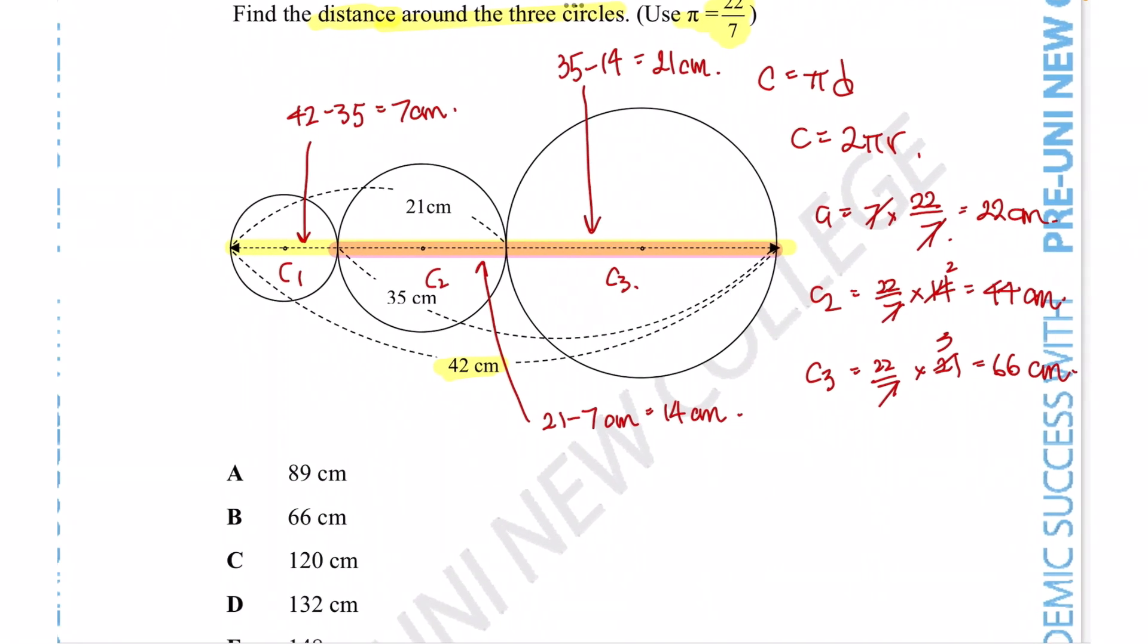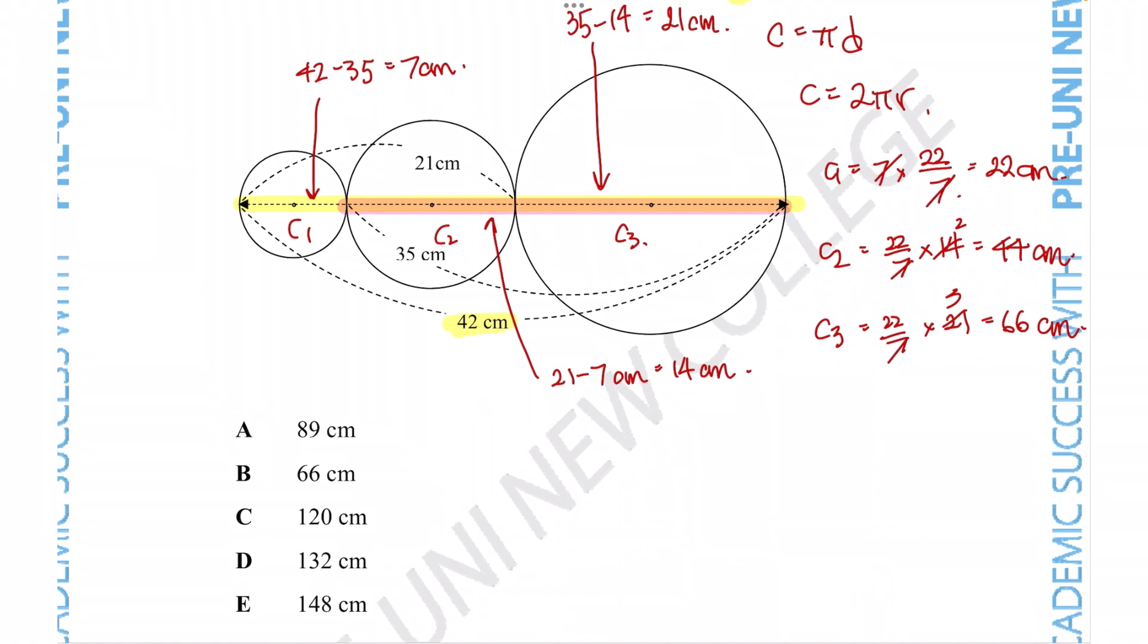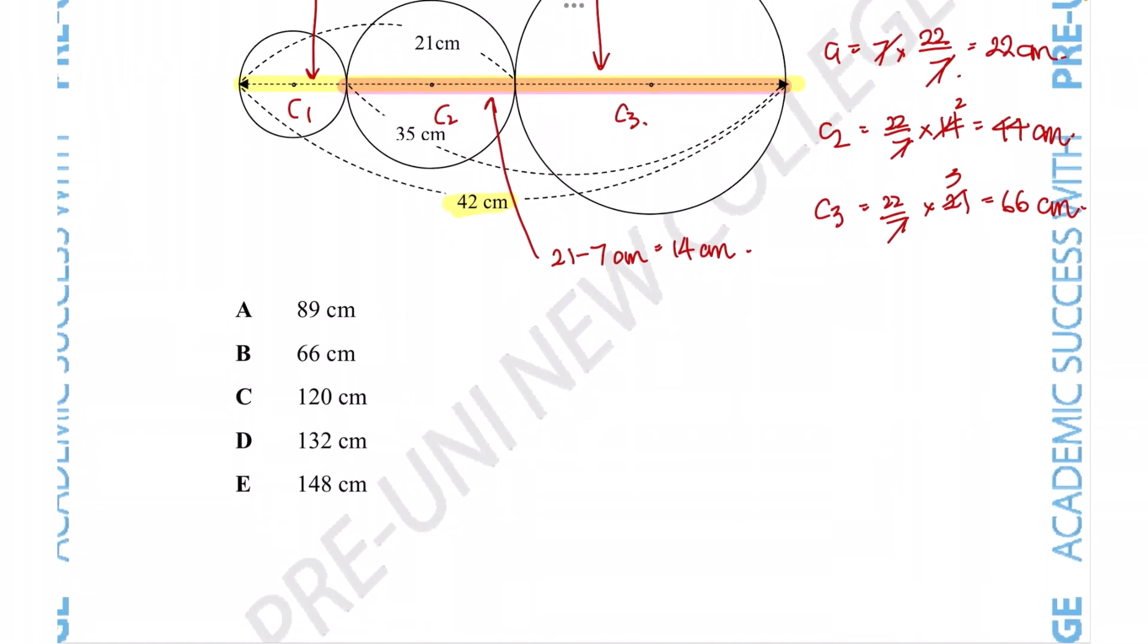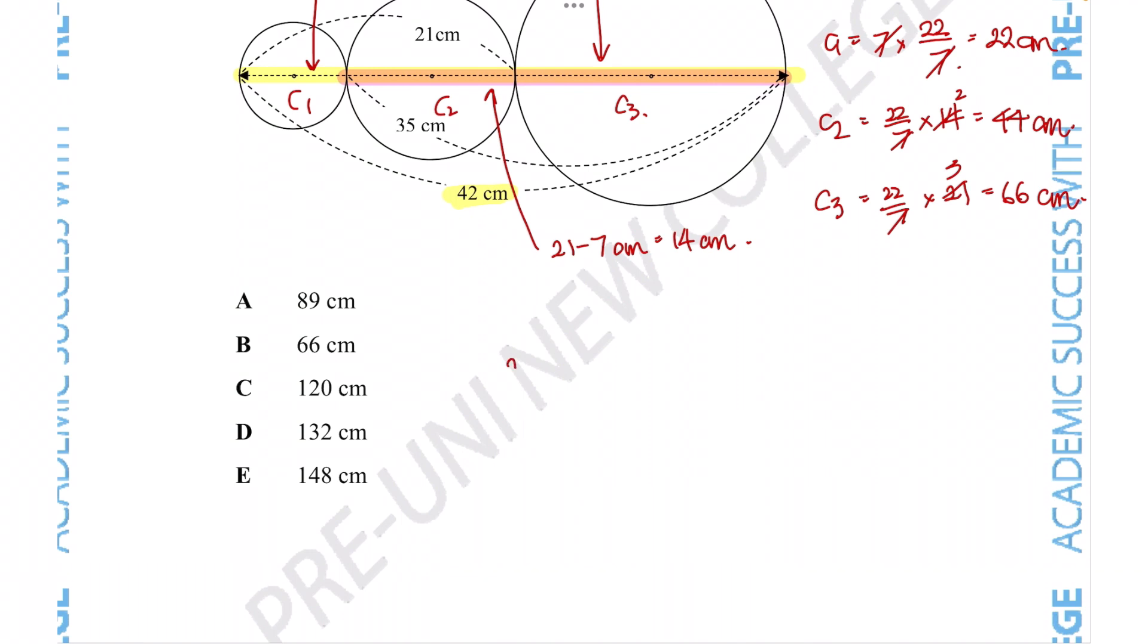Okay, so now we have all the pieces of the puzzle. Because the question wanted the total distance, all we need to do is add these three numbers together. 22 plus 44 plus 66, that should give us a grand total of 132 centimeters or option D.